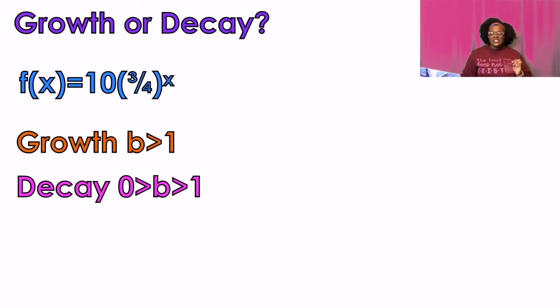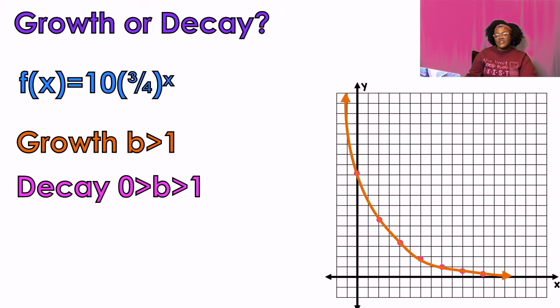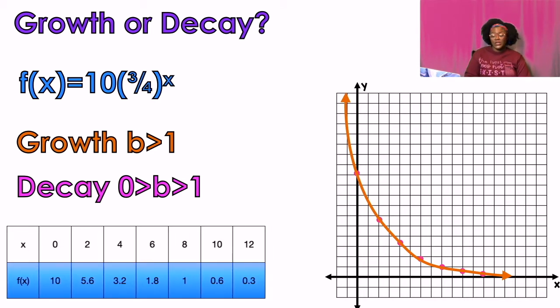So let's determine f of x equals 10 times three fourths to the power of x. What is the B value? You have to determine what the B value is in this problem. The B value is always going to be the number touching the exponent of x. So in this case, that's three fourths. Is three fourths greater than one, orange? Or is it between zero and one, pink? Think about it. Three fourths.